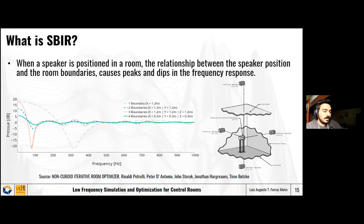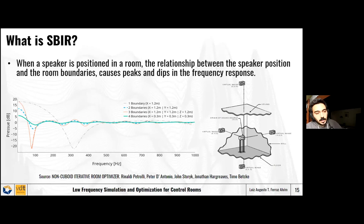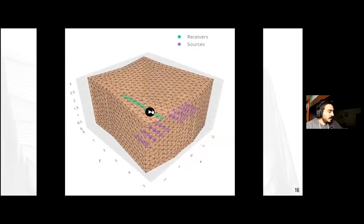This plot from the same paper shows the speaker boundary interference response for increasing amounts of boundaries. On the right-hand side we can see an analogy with virtual sources that causes these cancellations and peaks. Now we can watch the optimization animation again, and hopefully the procedure will be clearer with this additional knowledge.